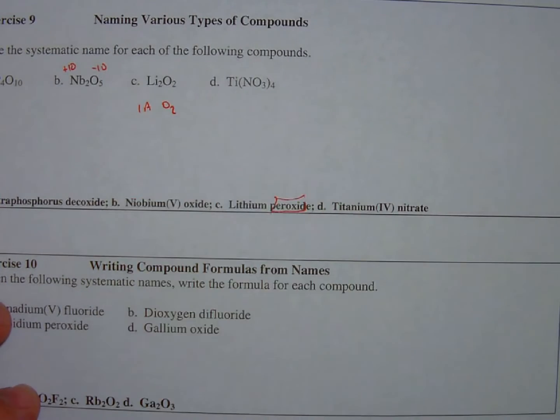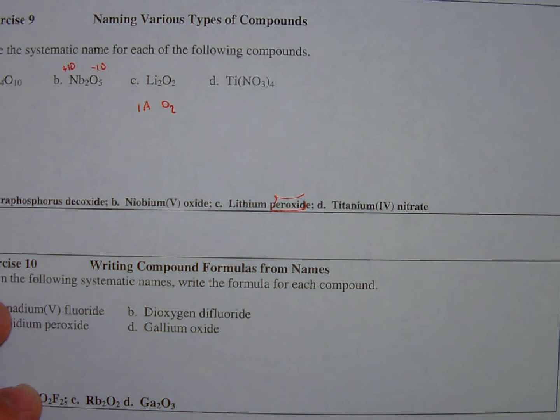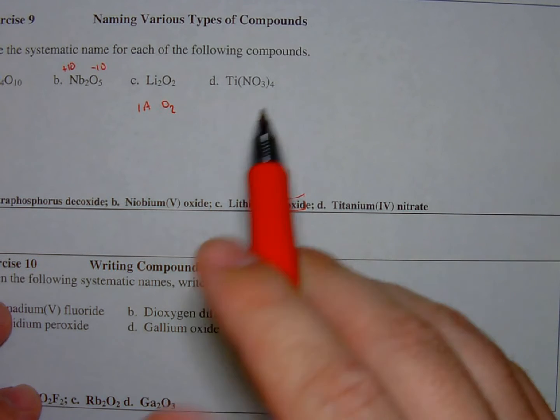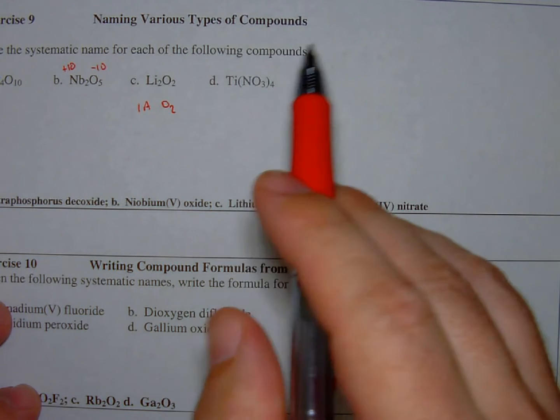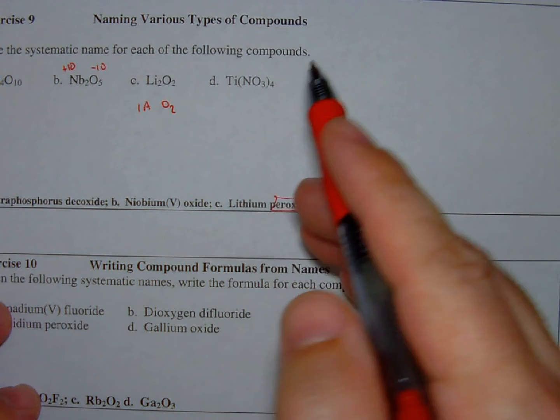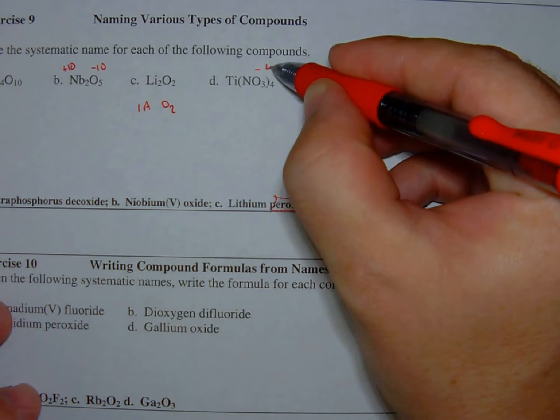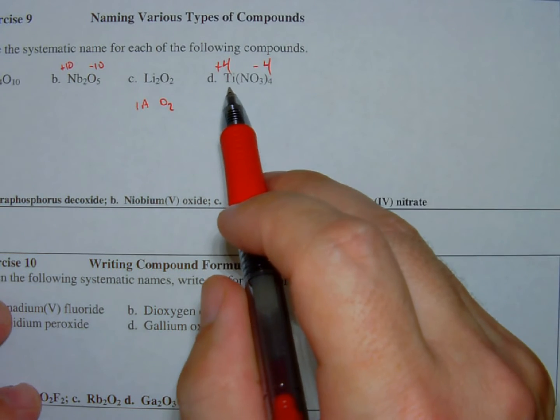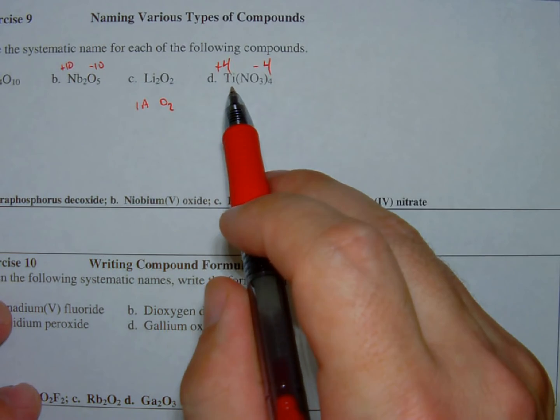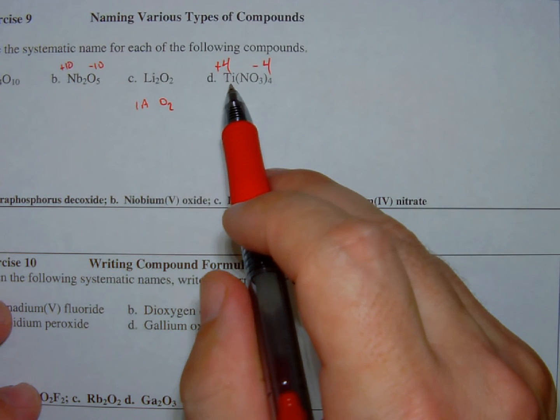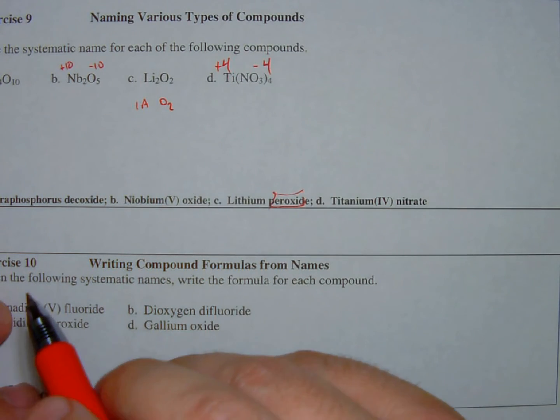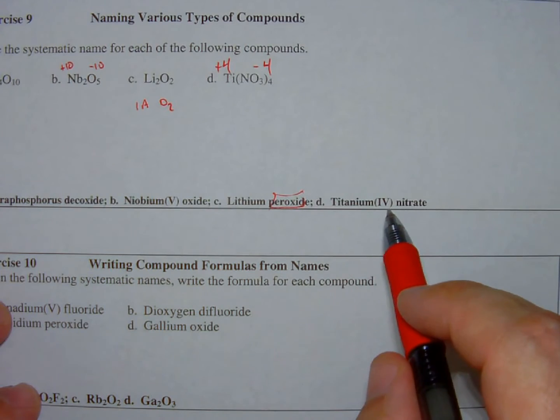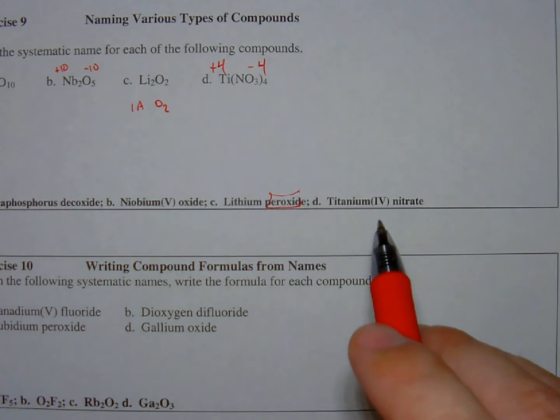D. That's titanium, a transition metal. So I'm going to have to use Roman numerals in parentheses. But what is that number going to be? I see nitrate. Nitrate has a minus one charge. There are four of them, so that's a total of minus four charge. That has to be balanced by a plus four charge. How many titanium atoms are providing that plus four charge? Only one. So that titanium must have a plus four charge. Titanium four nitrate. This can be very elegant.